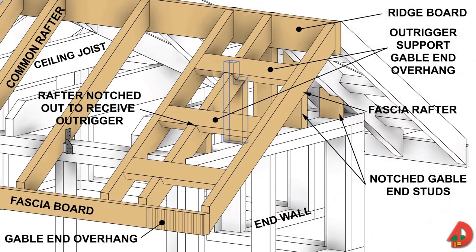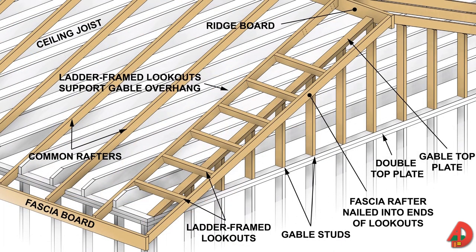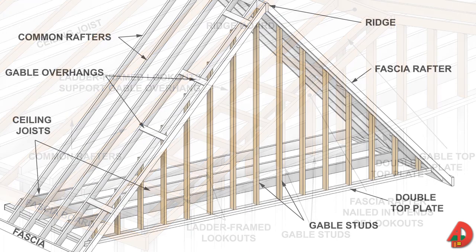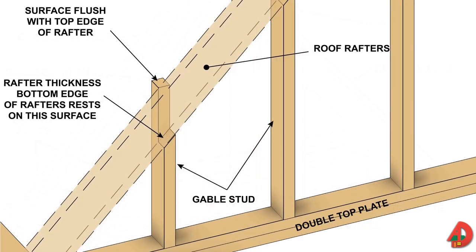Another overhang is formed over each gable end of a building. The main framing members of the gable end overhang are fascia rafters, which are fastened to the ridge board at one end and to the fascia board at the other end. Fascia boards are nailed to the tail end of common rafters to serve as a finish piece at the edge of a roof. By extending past the gable ends, fascia boards also help support the fascia rafters. Vertical members called gable studs are placed at each end, decreasing in length from the ridge toward the exterior side walls, providing gable wall structure and supporting rafters along their bottom edges.